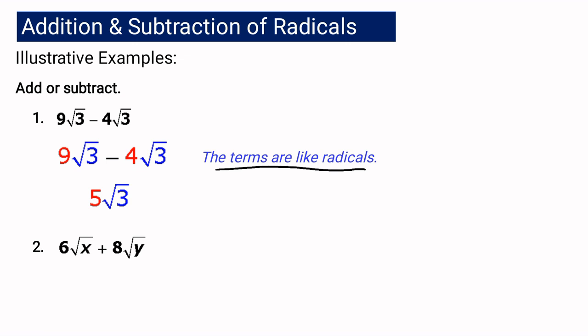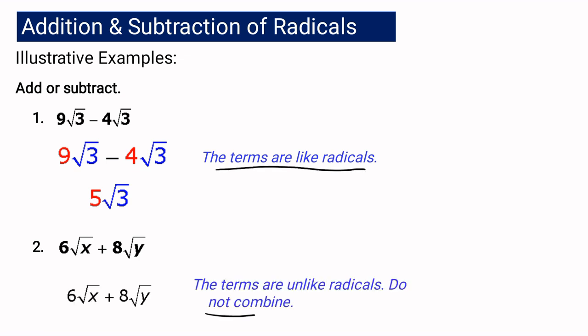For our next example, we have 6 square root of x plus 8 square root of y. What have you noticed? The terms are unlike, so we are not going to combine them — we cannot simplify this any further. So it remains 6 square root of x plus 8 square root of y.